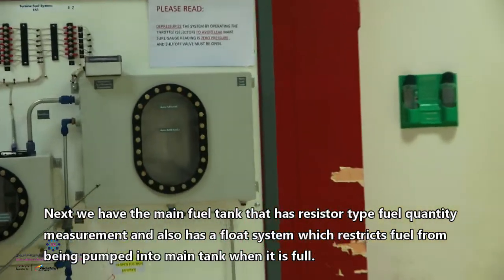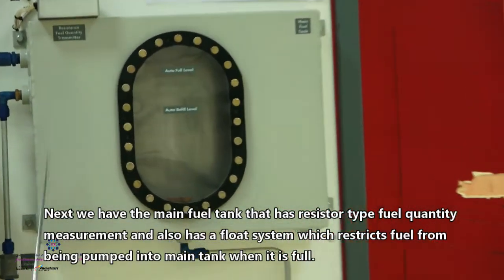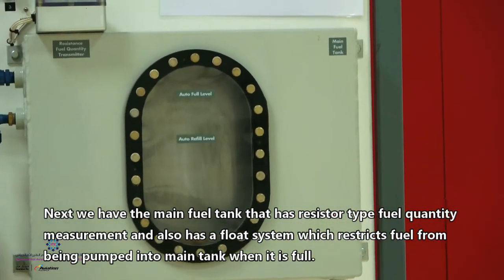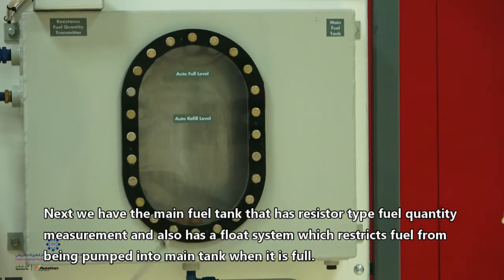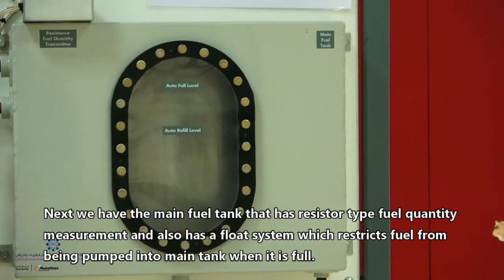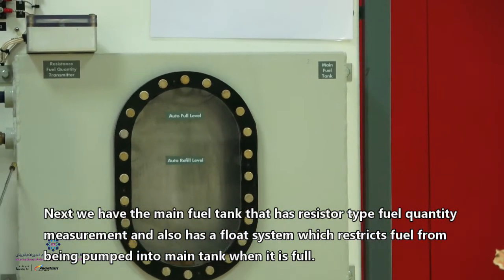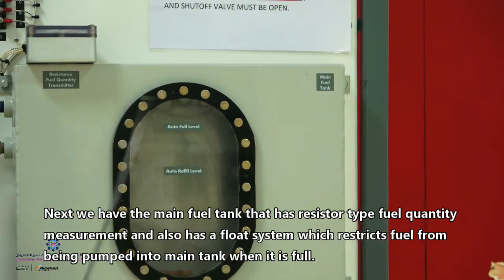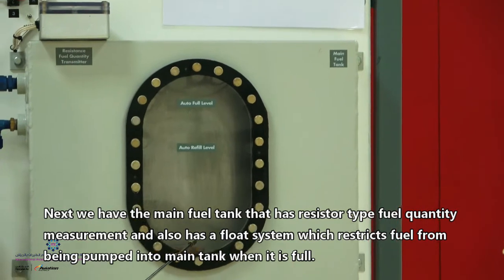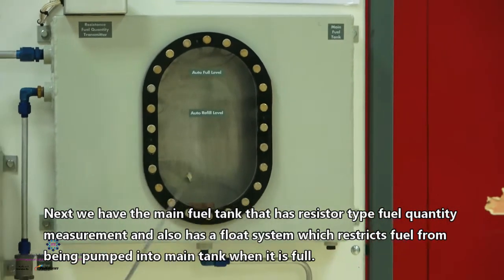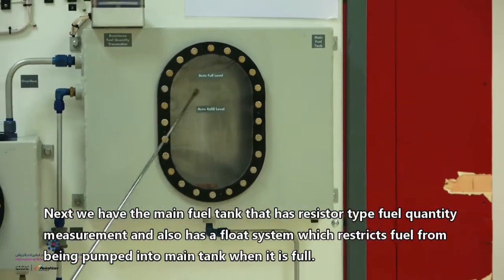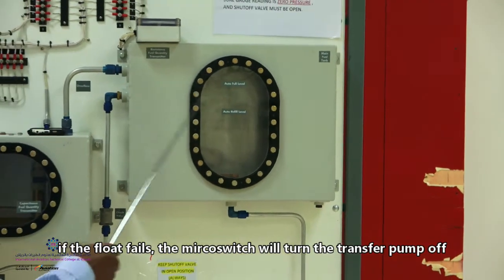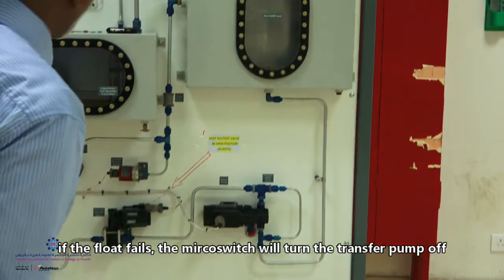The main fuel tank has a resistor fuel quantity transmitter and also it has a float valve. When the fuel is transferred to the main fuel tank and it reaches the max level, the float valve will close the line. In case it fails to close, then the micro switch will turn the transfer pump off.